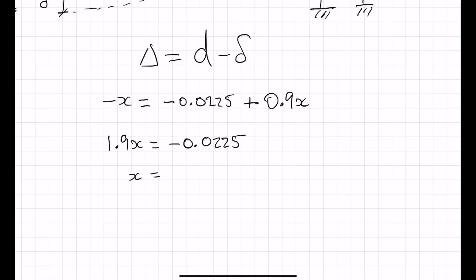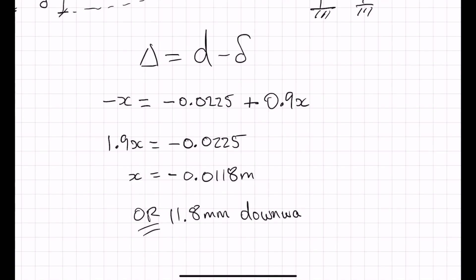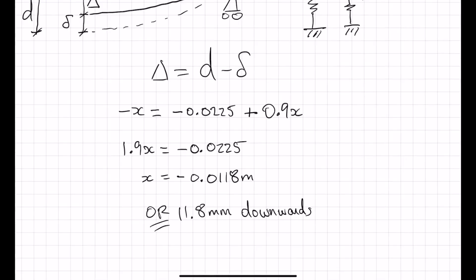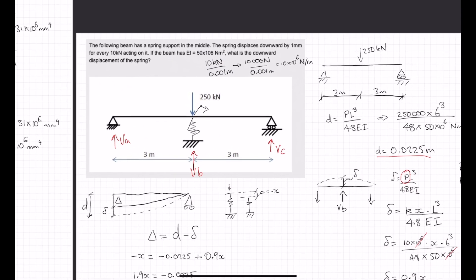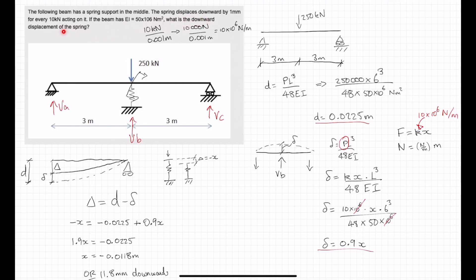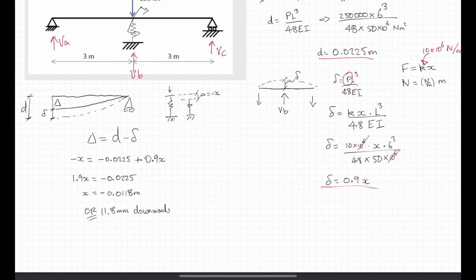And I think that solves the question: what is the downward displacement of the spring? Here is our answer: 11.8 millimetres downwards.